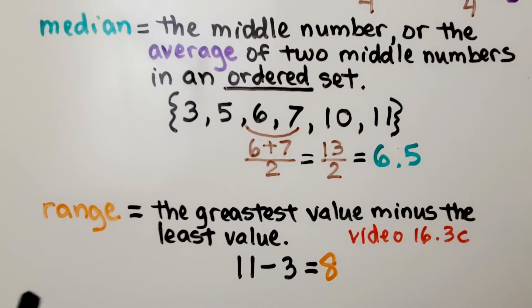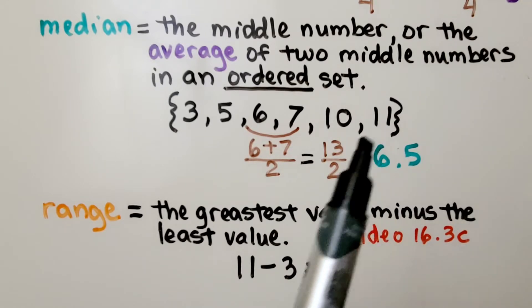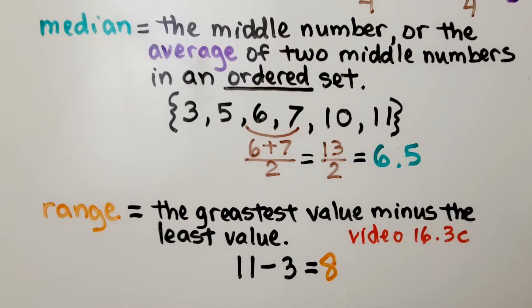The range is the greatest value minus the least value. We have the greatest value, 11, and the least value, 3. The range is 8.